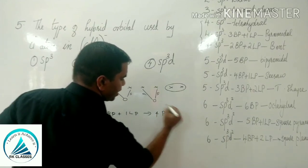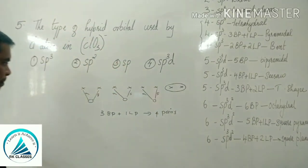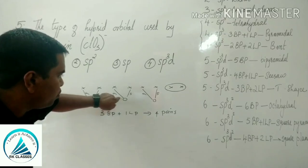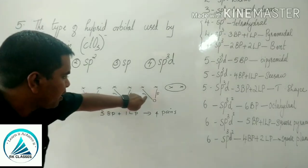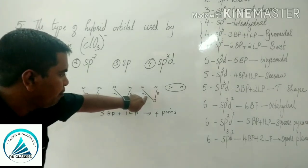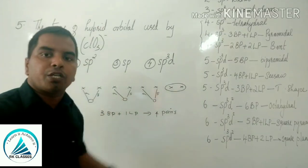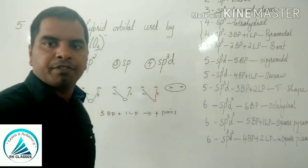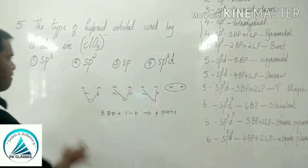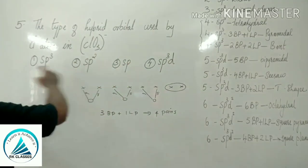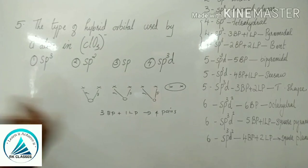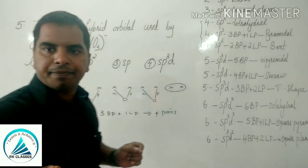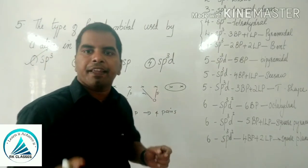With 4 total electron pairs — 3 bond pairs and 1 lone pair — the hybridization of chlorine in ClO3 minus is sp3.